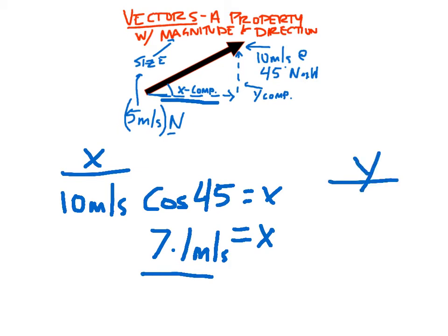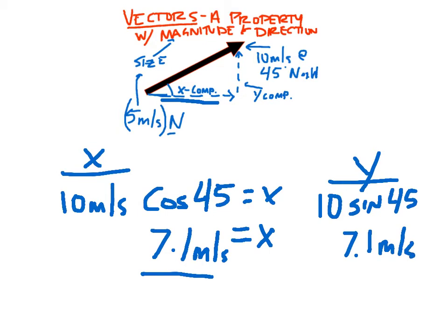To find the y direction, it's going to be 10 times the sine of 45, and again we're going to get 7.1 meters per second. In this case, north in the y direction, and east in the x direction. North, south, east, and west are confusing for me.